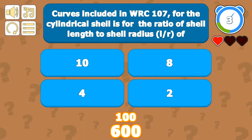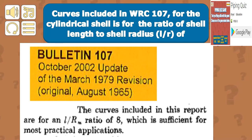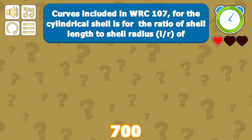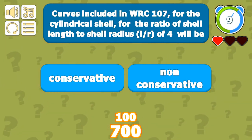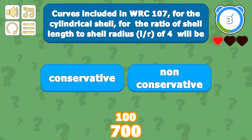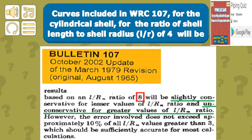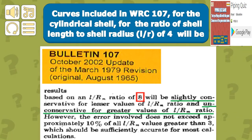The curves included in the bulletin are for L/R of 8, as provided in WRC Bulletin 107. For a cylindrical shell with L/R of 4, the results will be slightly conservative, since results based on L/R of 8 will be conservative for lesser values of L/R.